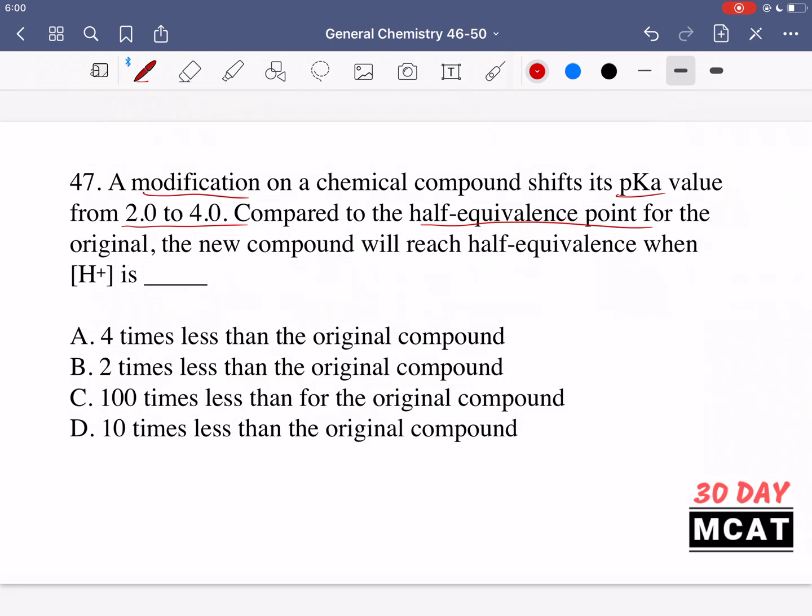If you went from 2 to 3 you multiply by 10, so 10 times less, but if we go from 3 to 4 it's another 10, so it's 10 times 10. Going from 2 to 4 is 100 times less. So this new compound is going to reach half equivalence when we have 100 times less H+ concentration than we needed to reach half equivalence at pH or pKa 2.